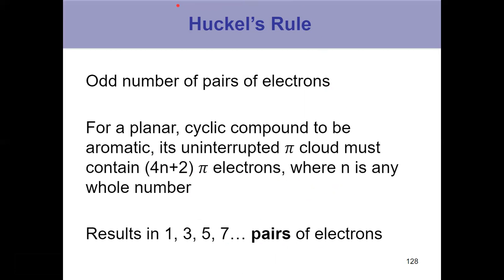Like 6 and 10 are Huckel number of electrons. So that allows something to be aromatic. Benzene, having 6 pi electrons, meets that 4n plus 2 criteria.